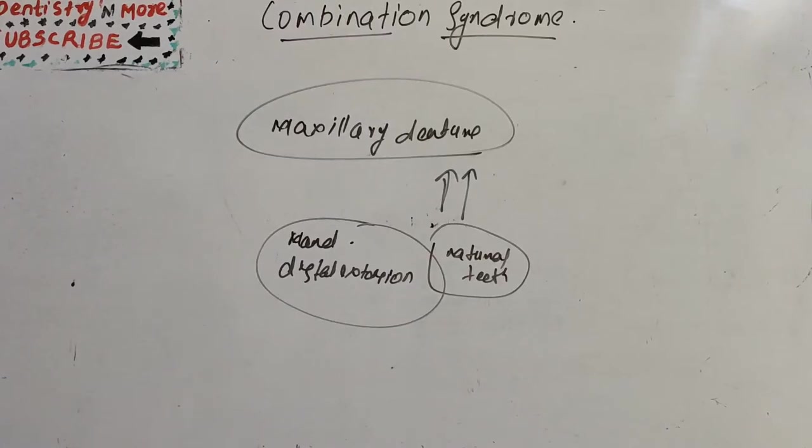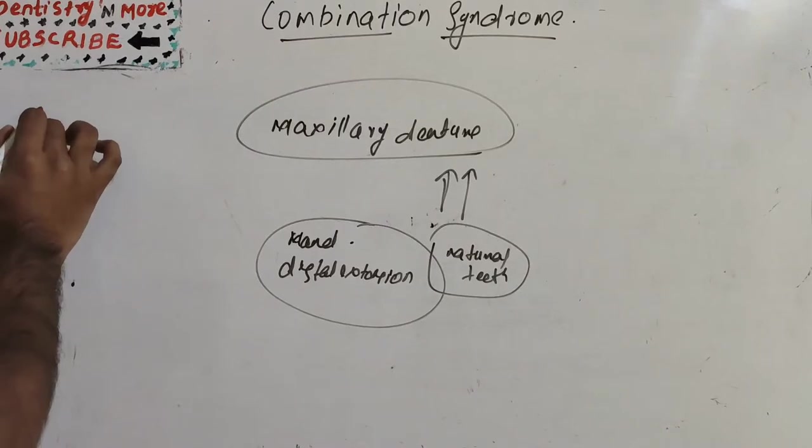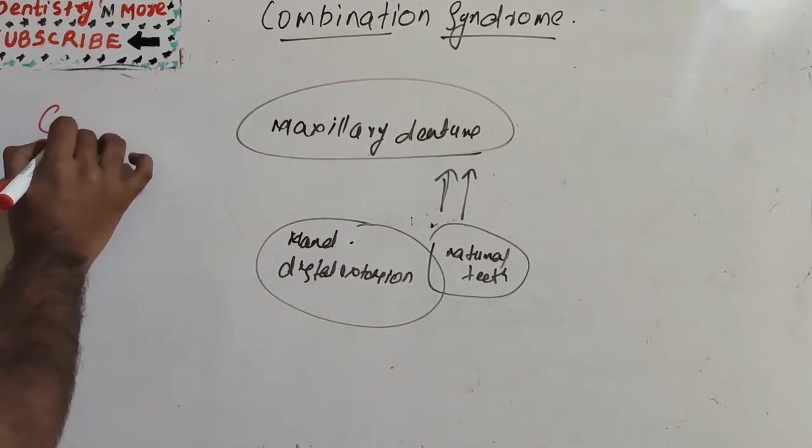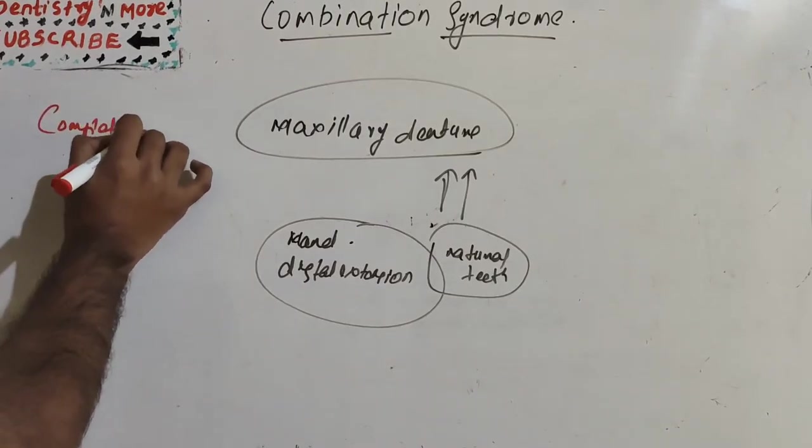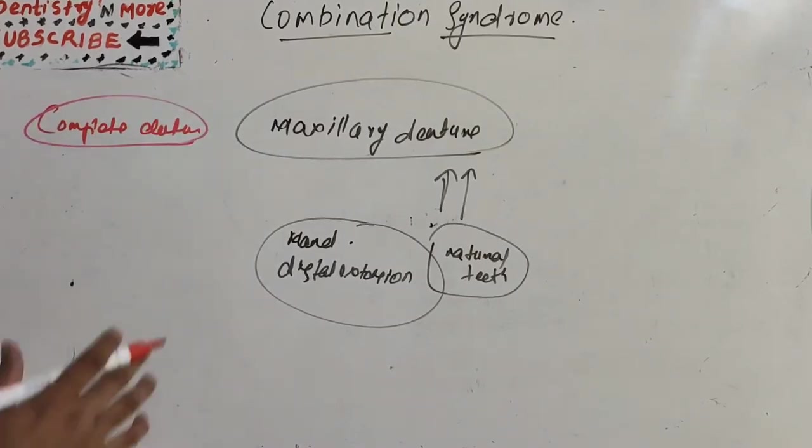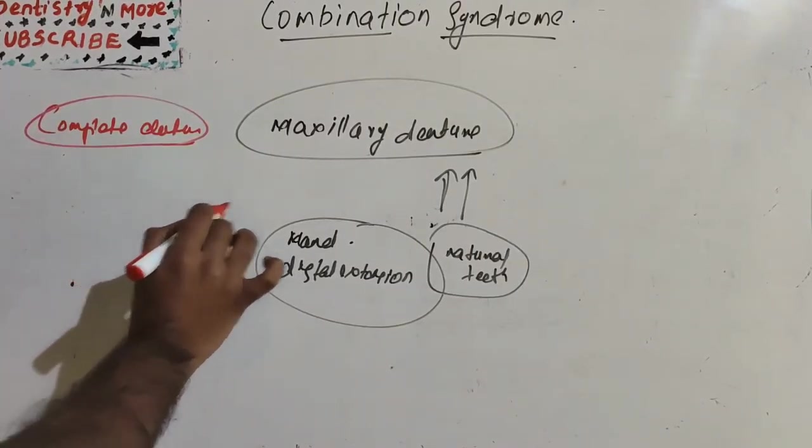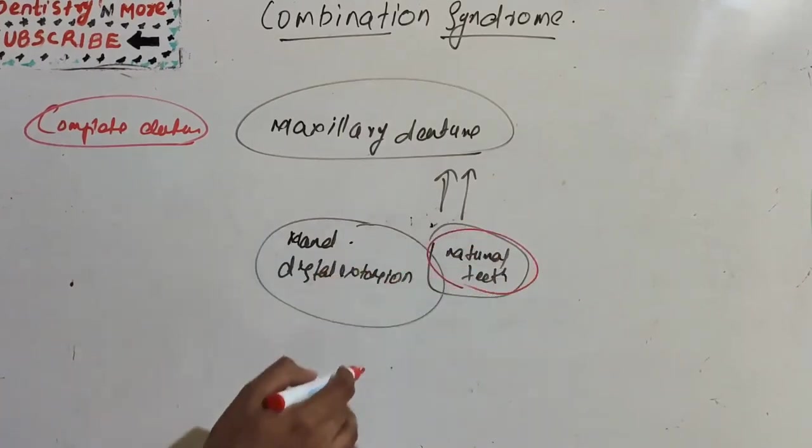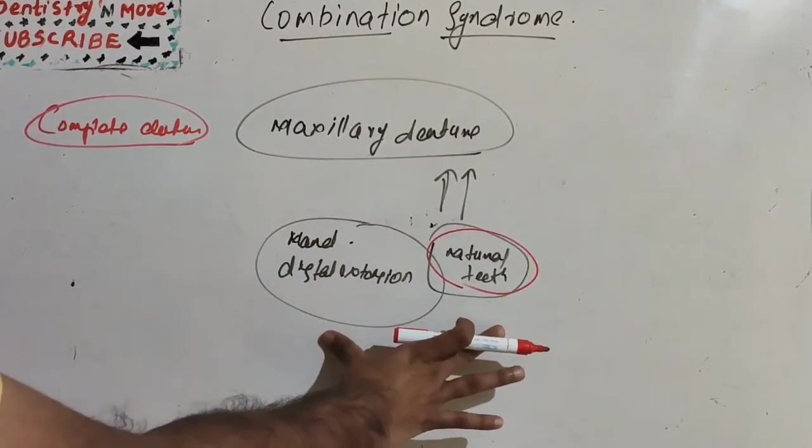Combination syndrome occurs when we have a complete denture on the upper arch and a distal extension case on the lower arch, meaning only the natural anterior teeth remain in the lower arch.